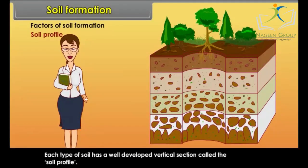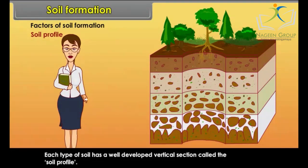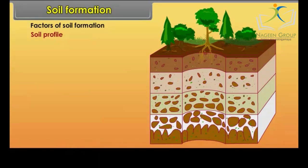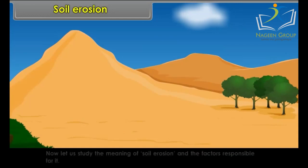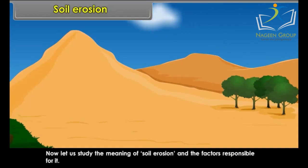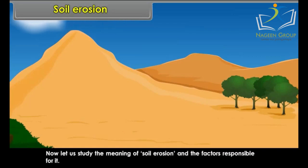Soil Profile: Each type of soil has a well-developed vertical section called the soil profile. The top layer consists of fine particles and organic matter from decayed plants and organisms. The second layer is the subsoil layer.